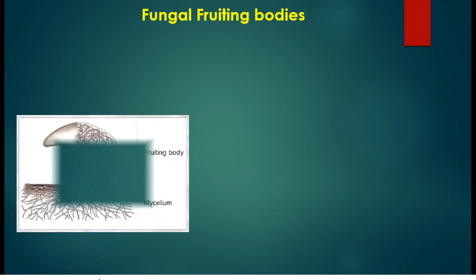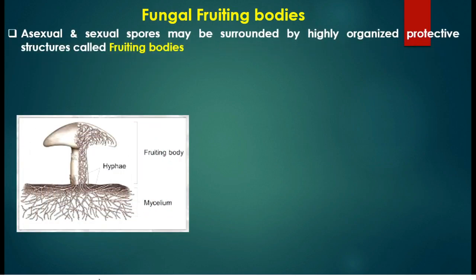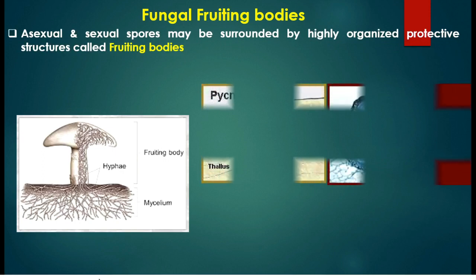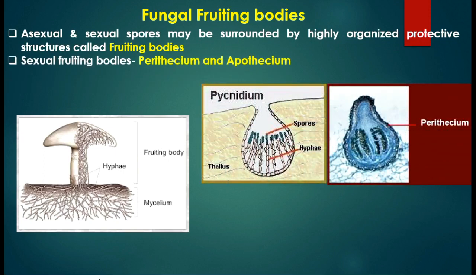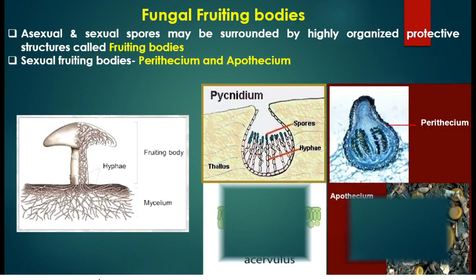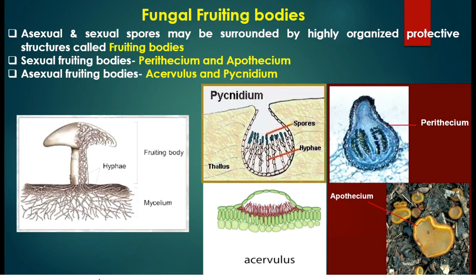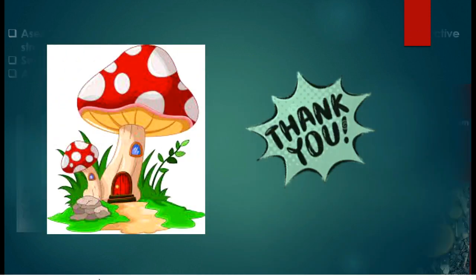Asexual and sexual spores of fungus are not always open structures; they may be enclosed within highly organized protective structures called fruiting bodies. Sexual fruiting bodies are known as perithecium and apothecium, and the asexual fruiting bodies are called acervulus and pycnidium. That's all about sexual reproduction in fungus.